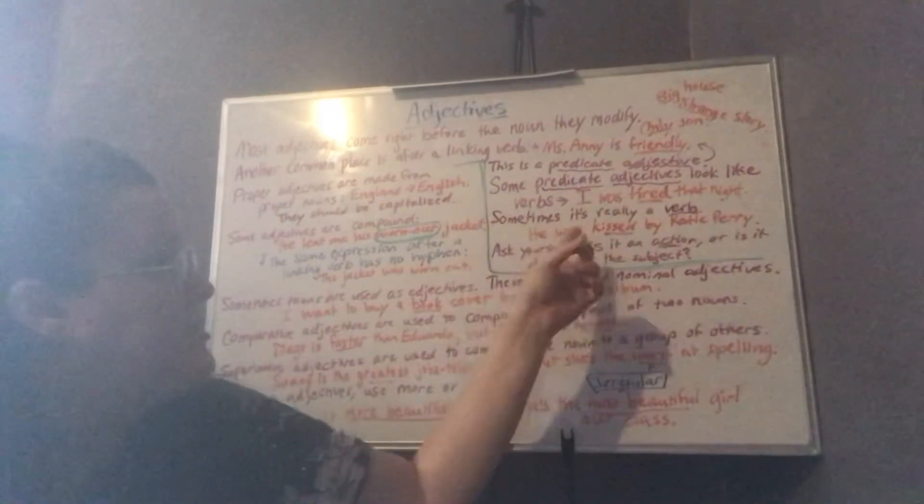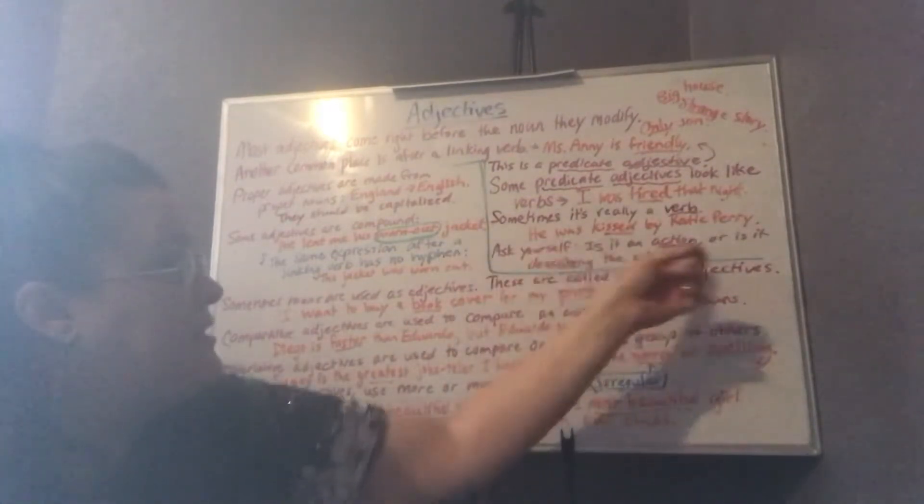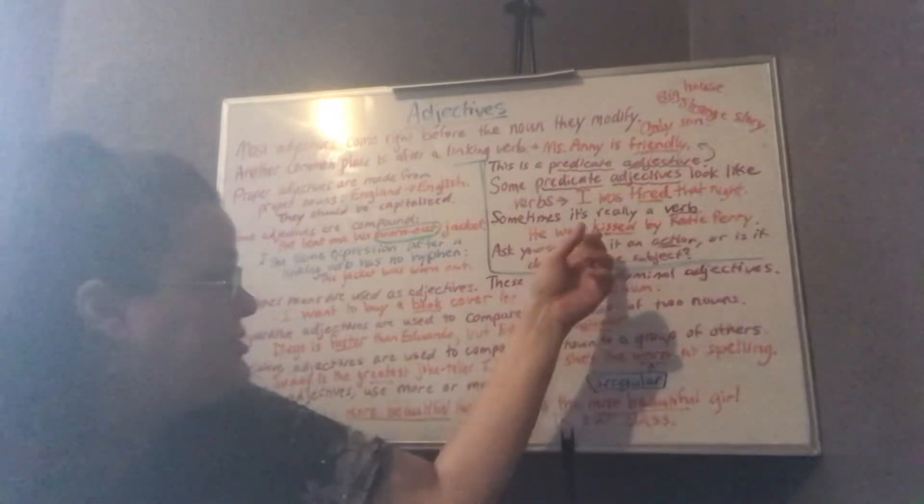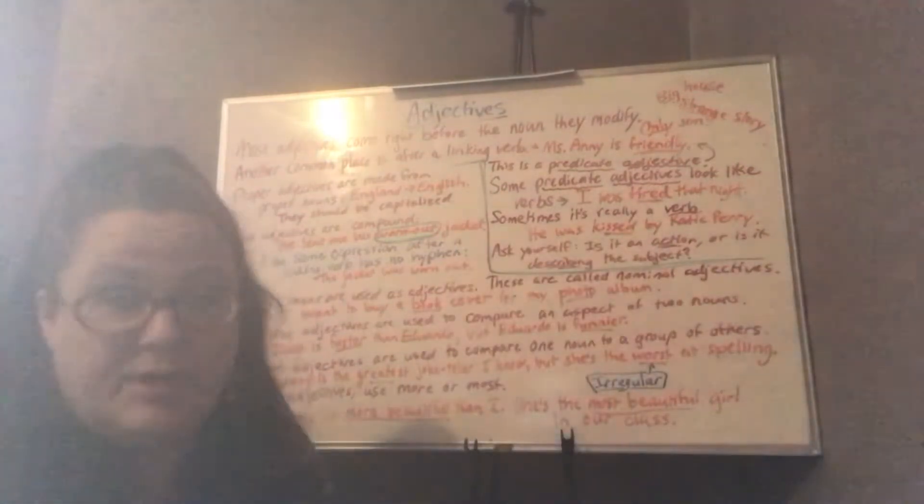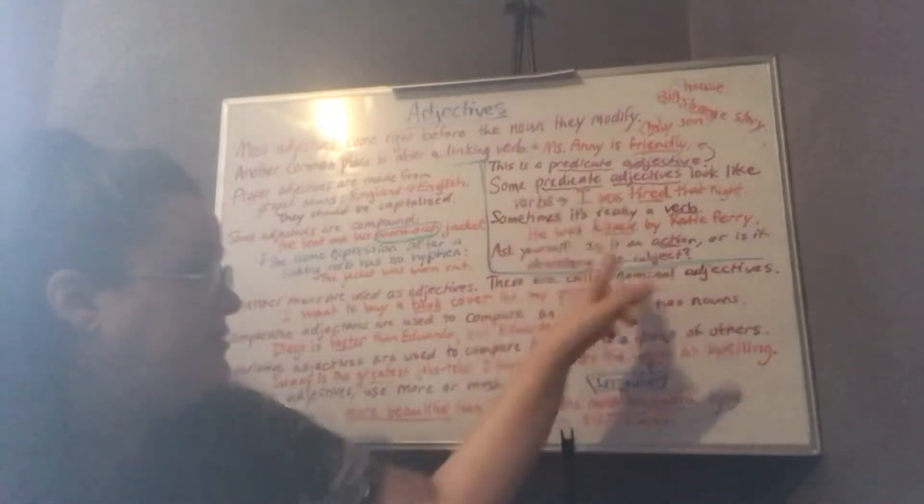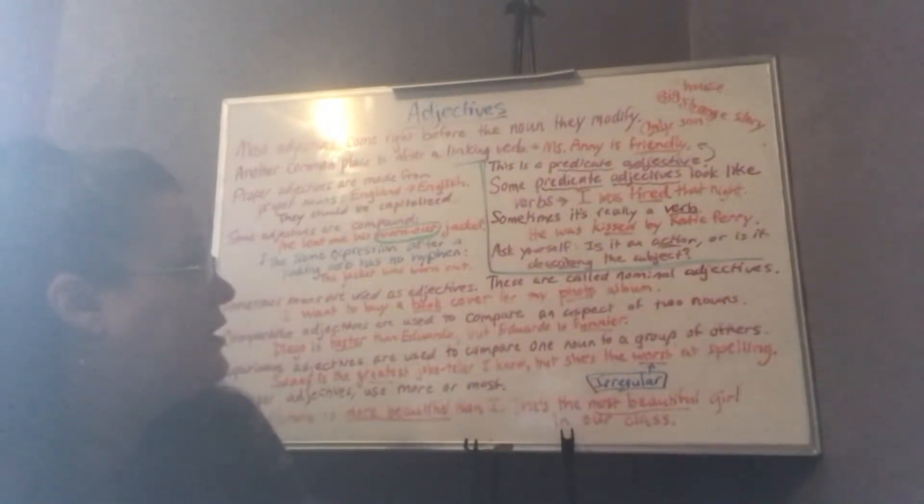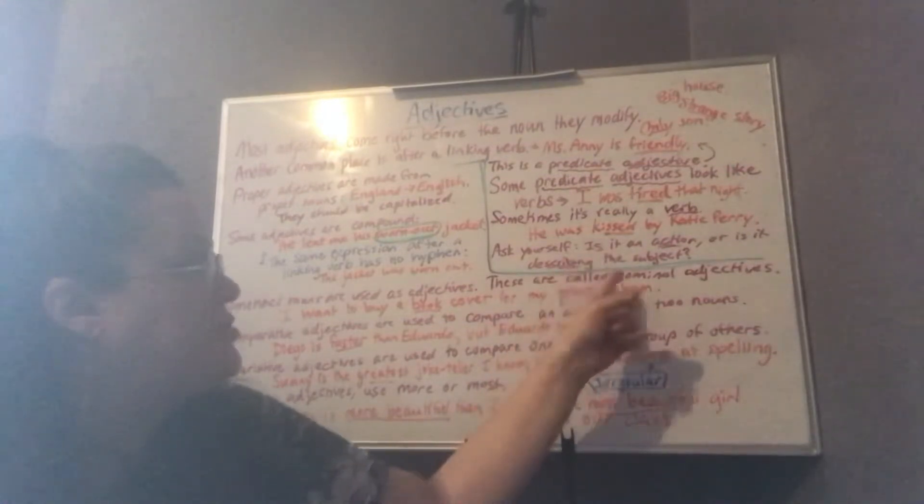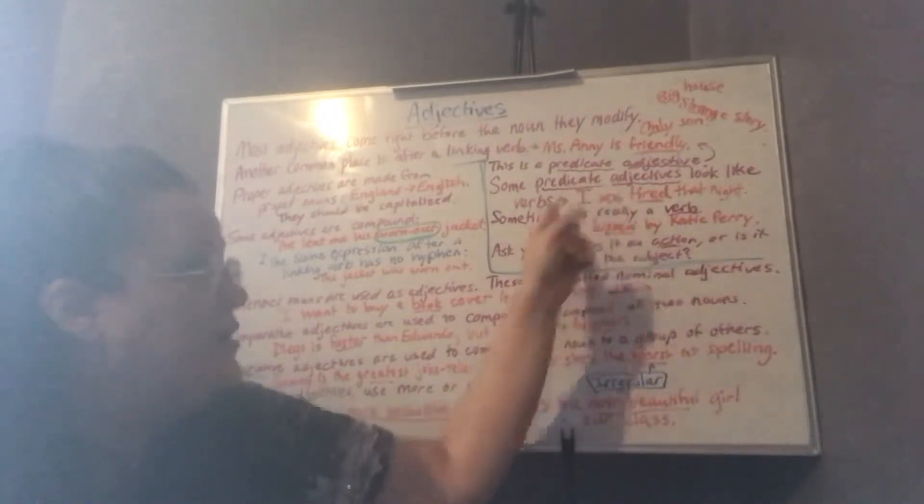But sometimes it's really a verb. He was kissed by Katy Perry. Kissed does not describe the boy. It talks about an action that took place. Ask yourself, is it an action like the kissed here? Or is it describing the subject like tired here?